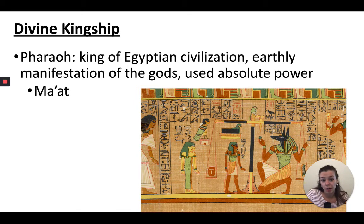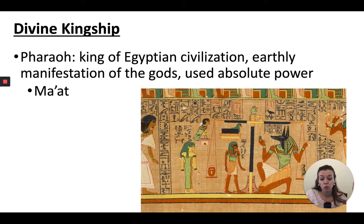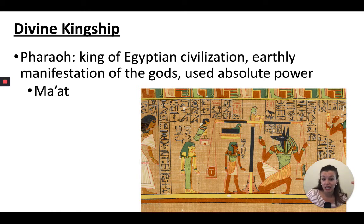It is the job of the pharaoh — the king — to maintain ma'at. Ma'at is the Egyptian term for the concept of divinely created and maintained order. Egyptians hated chaos; everything was about order. The king is considered to be a reincarnation of the god Horus, the sky god. You can tell a good king is maintaining ma'at because he's providing for the welfare and prosperity of his country.